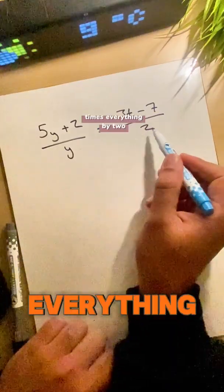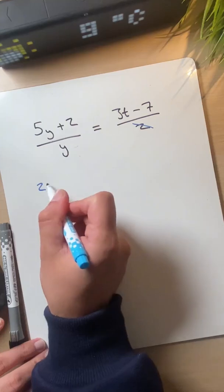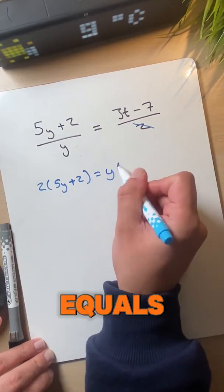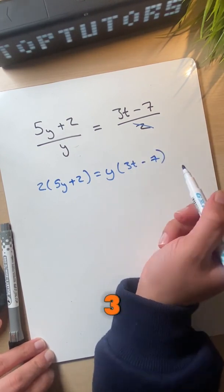Let's make y the subject here. Times everything by 2 so we can cancel the 2. 5y plus 2 equals y times 3t minus 7.